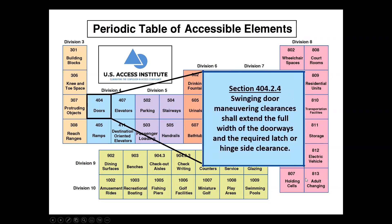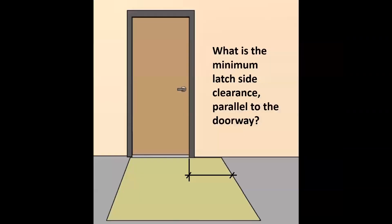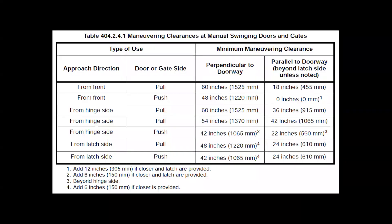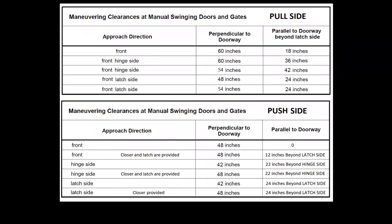Now we look at section 404.2.4, which reads: swinging doors — maneuvering clearances shall extend the full width of the doorways and the required latch or hinge side clearance. We go to table 404.2.4.1 on maneuvering clearances at manual swinging doors and gates. This table is from the 2010 ADA standards. The table is a little confusing with push and pull doors all mixed together, and there are four additional footnotes to keep in mind. Therefore, we recreated the table with two sections — one for pull doors and one for push doors — with all footnotes incorporated right into the table.